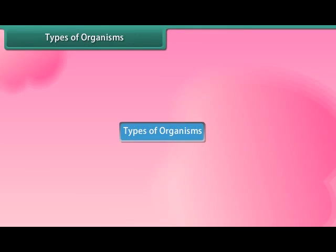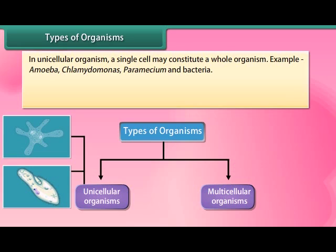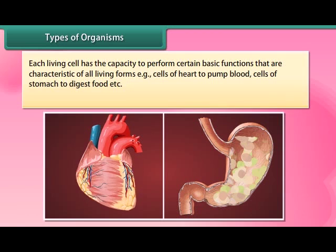There are two types of organisms: unicellular and multicellular. In unicellular organisms, a single cell constitutes the whole organism — examples include Amoeba, Chlamydomonas, Paramecium, and bacteria. In multicellular organisms, many cells group together in a single body and assume different functions to form various body parts — examples include some fungi, plants, and animals.